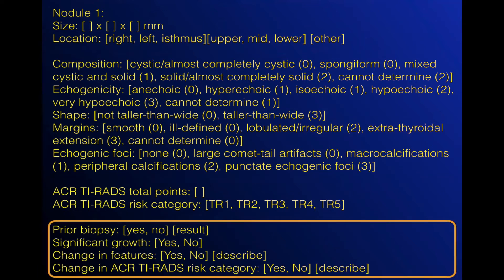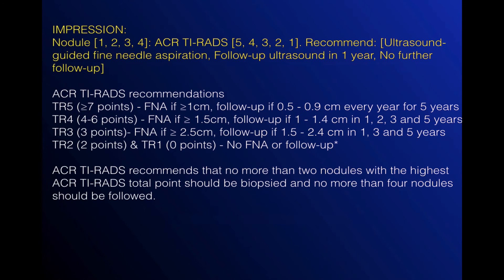If the patient has had a prior ultrasound or biopsy, you need the section describing any change; if they haven't, just delete it. Then in the impression, for all nodules I recommend putting the recommendation at the end. If there's more than one nodule, pick nodule one first, give the ACR TIRADS level and then the recommendation. The recommendations are shown in white font below — you can delete this if you don't want it in your report. If there's more than one nodule, copy and paste the section again and label it nodule number two.